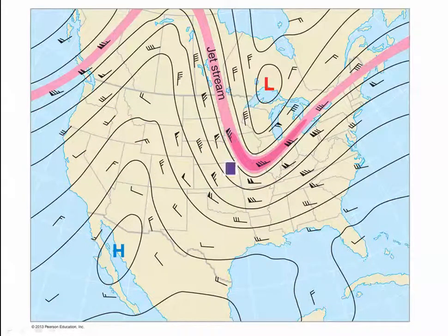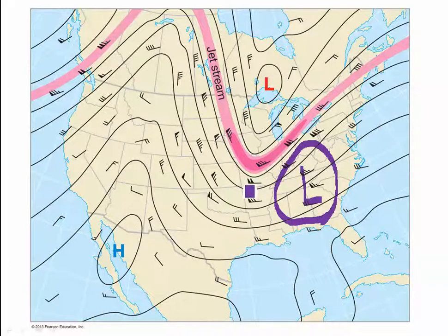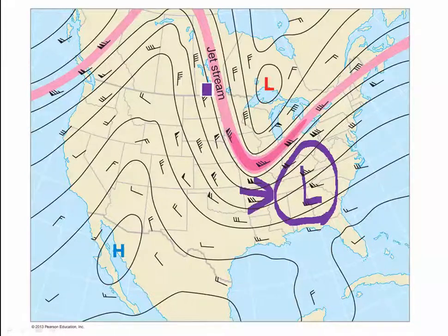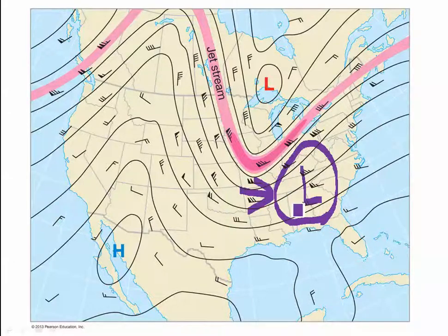We know that we typically see surface low pressure systems developing to the east of upper air troughs. So if we have this trough here on the east, then we know that we're typically going to have a surface low pressure to the east of that. And so what that means for weather in the southeastern U.S. is they're going to get prolonged,